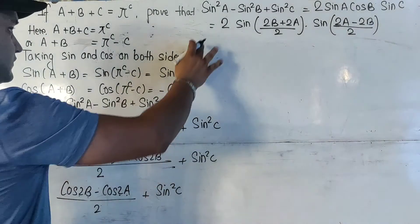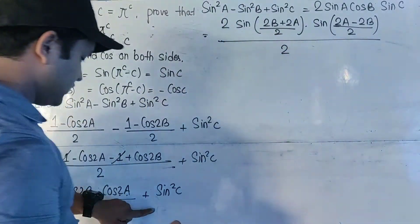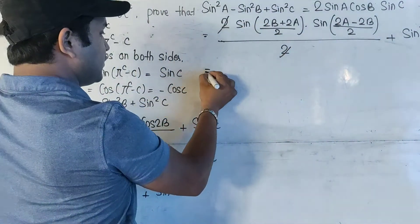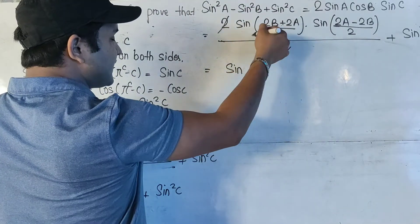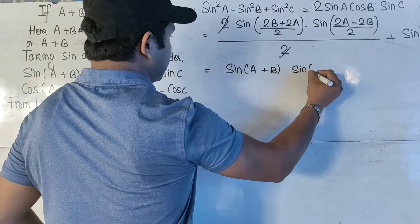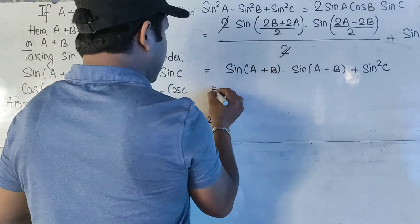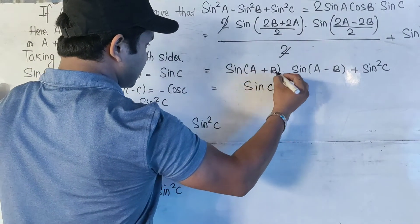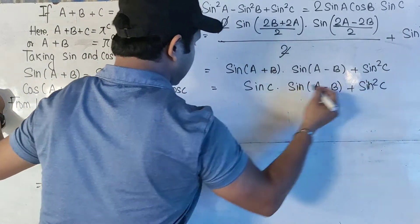In the denominator we have 2, and on the other side we have sin²C. The 2s cancel. Solving (2A + 2B)/2 by taking 2 common and cancelling, we get sin(A+B). We also get sin(A-B) plus sin²C. Now sin(A+B) = sinC, so we write sinC·sin(A-B) + sin²C.